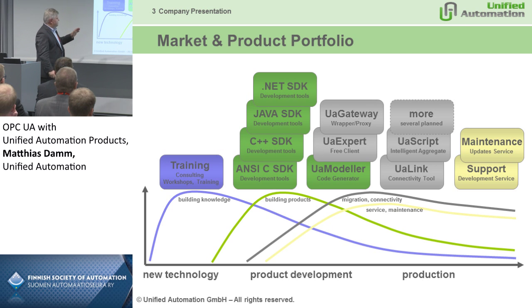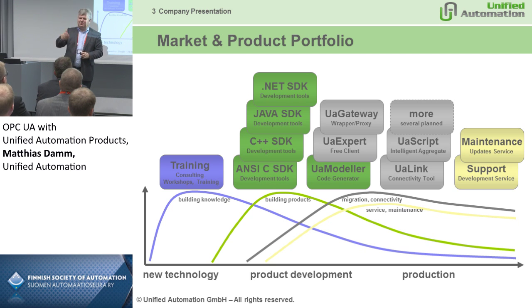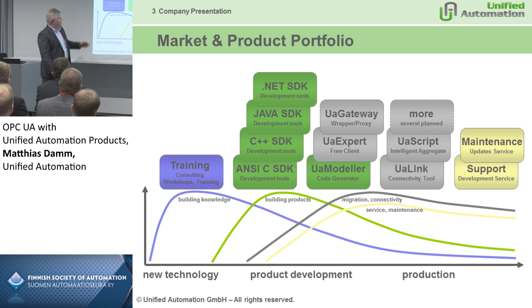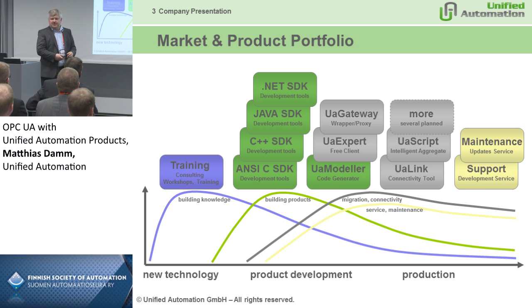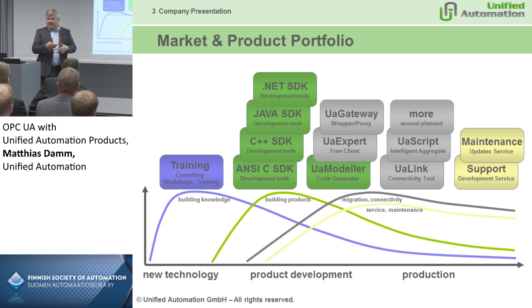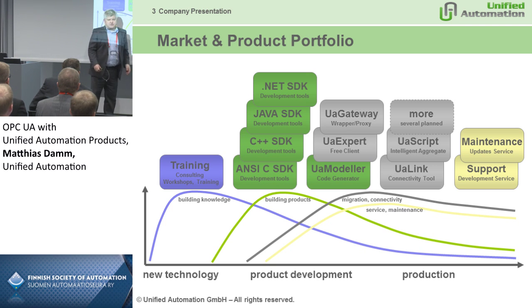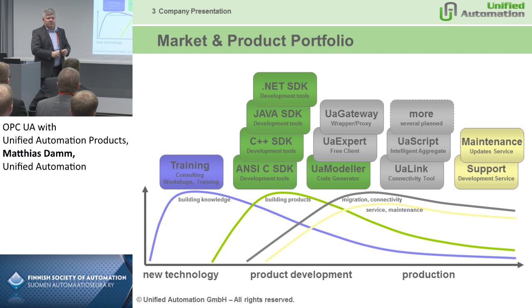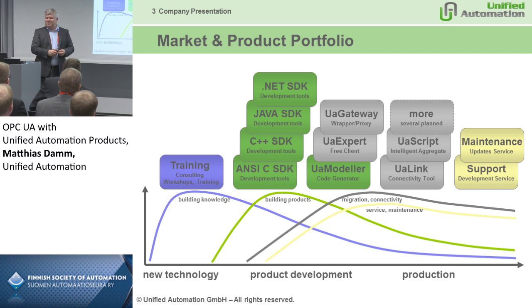Our products and services are structured around the product lifecycle of an OPC UA product. It starts from building knowledge with training, consulting, and workshops, to building products with different SDKs in different programming languages. To increase development productivity, there are tools like UA Modeler — a graphical user interface for OPC UA modeling that also allows code generation for the SDKs and rapid prototyping. UA Expert is a free client used by many people to check if an OPC UA server installation works.